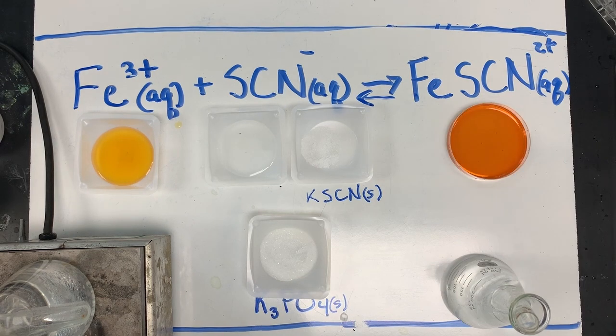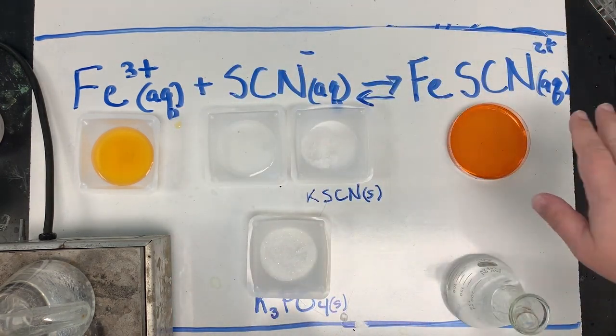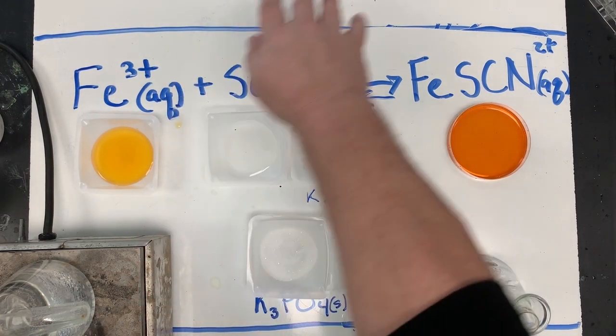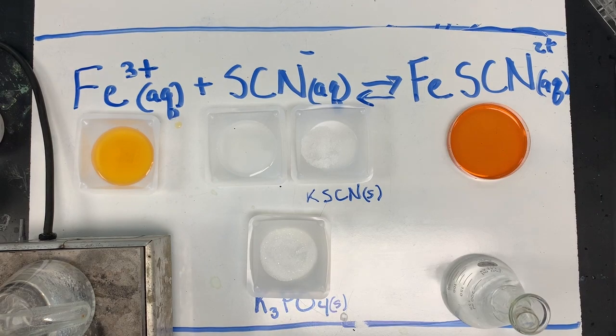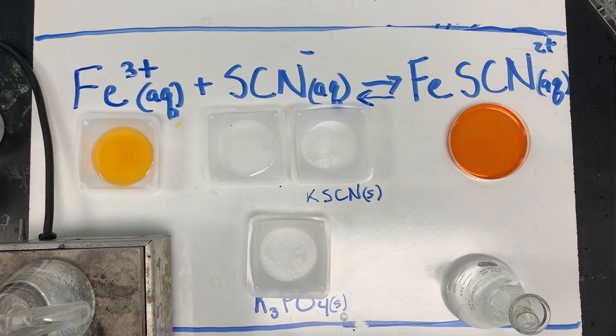Our goal now is to examine what happens when we change the temperature. So if I add heat to this mixture at equilibrium, will the reaction drive toward the thiocyanate? Or will the reaction drive toward the reactants, iron 3 plus and SCN minus? What evidence would we see if heat drove the reaction toward the products? What evidence would we see if heat drove the reaction toward the reactants?